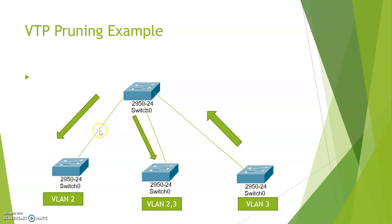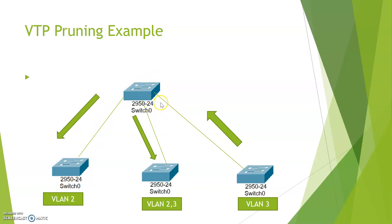Because this switch is only configured for VLAN 2 and this switch is configured only for VLAN 3, the VLAN 3 is unnecessary broadcast on this specific trunk. To reduce or remove the unnecessary broadcast on this trunk, we use VTP pruning. Whenever VTP pruning is enabled on the server switch, only the VLAN 2 broadcast will be forwarded to this switch and this trunk will forward only VLAN 3 information. So the unnecessary broadcast will be reduced.